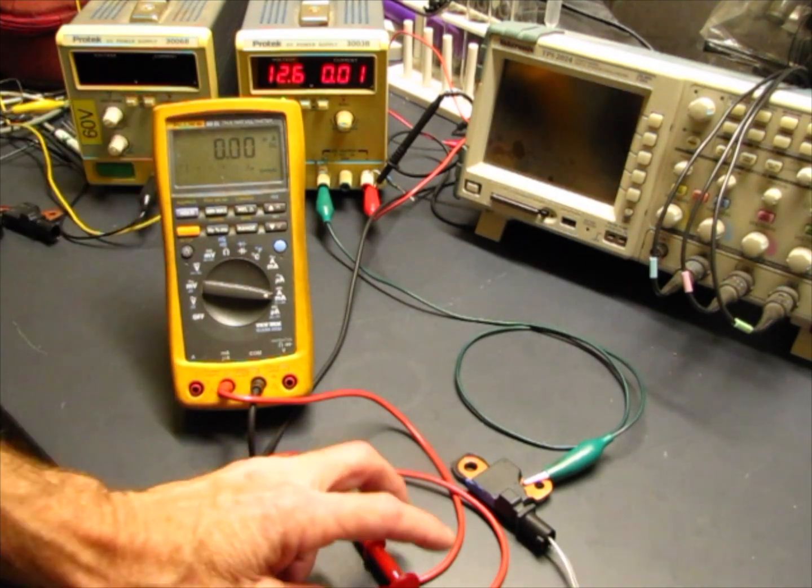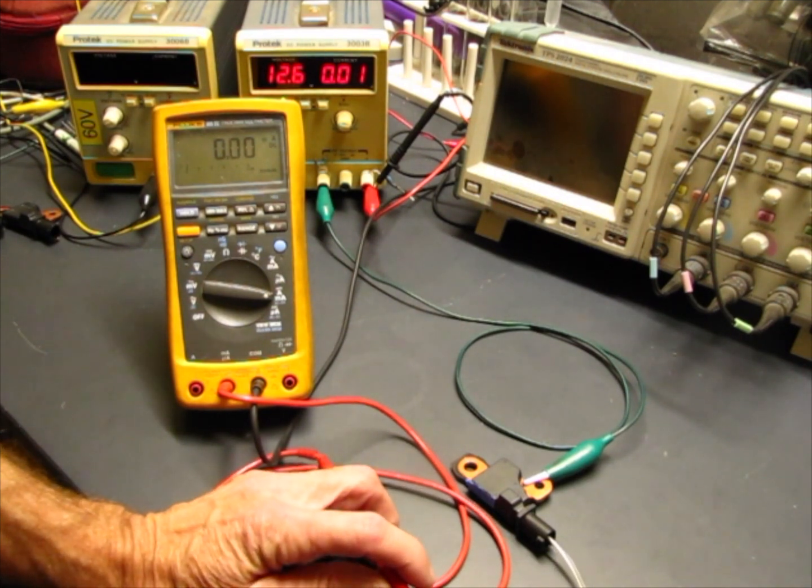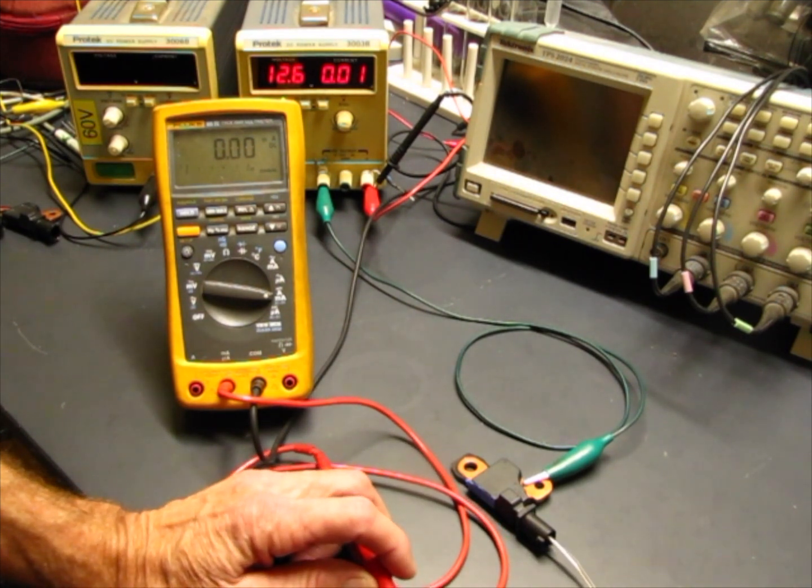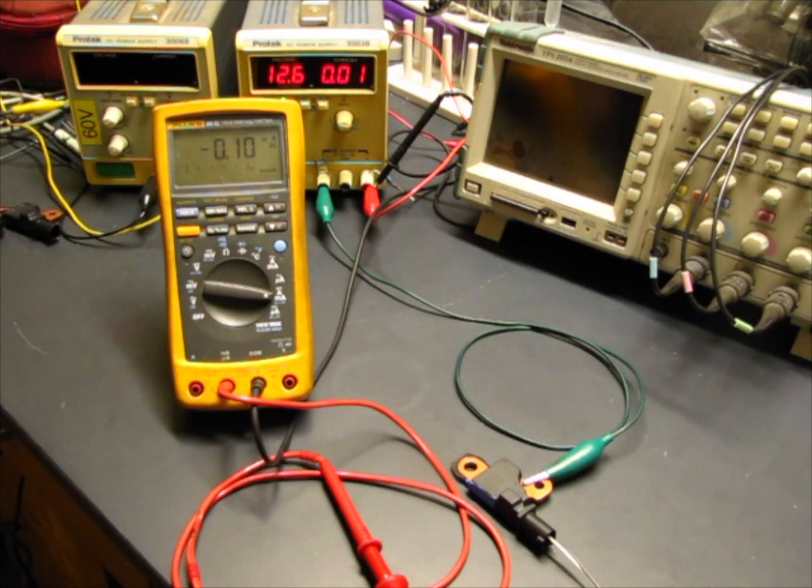You'll notice on the current meter here, which is reading in hundreds of a milliamp, that when we connect the 12 volt signal there's just a quick pulse to one and a half milliamps or so and then it drops to about a hundred microamps. This can be really hard to measure on most meters and it might be hard to know if the sensor is working at all.